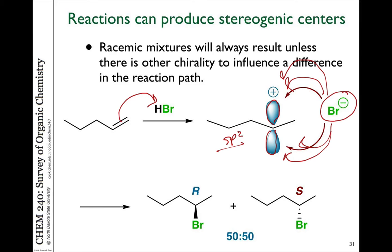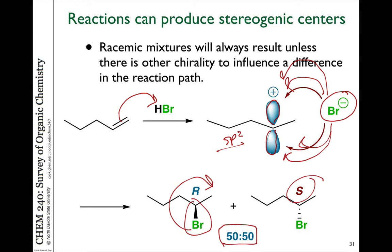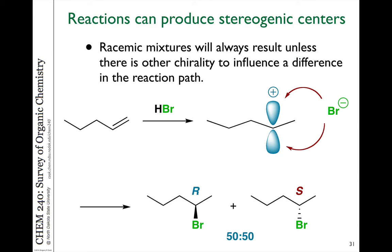So if it adds from the top, the bromine will be coming out towards us, and this is the R isomer. And if it adds from the bottom, the bromine is going away from us, and this is the S isomer. So what we form is a racemic mixture — a 50-50 mixture of enantiomers. This is a big challenge in organic chemistry: how do we synthesize molecules as a single enantiomer when we have no way to control the difference in energetics of adding to something like a carbocation?